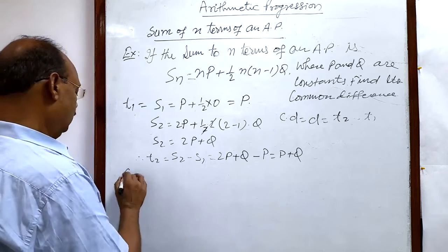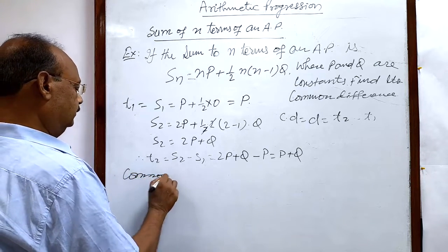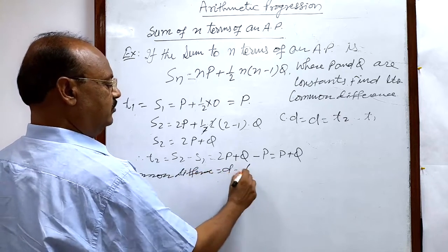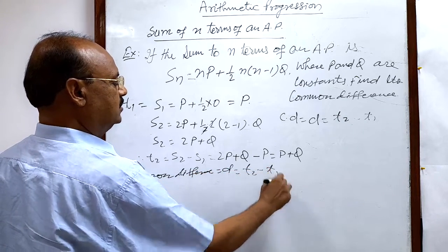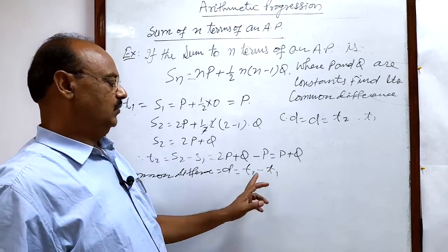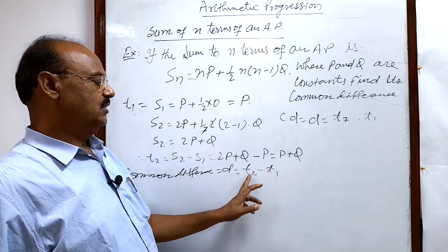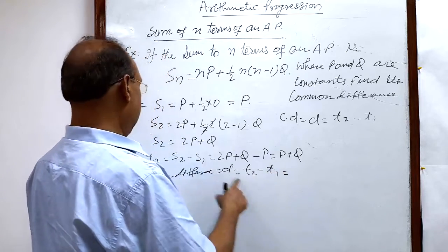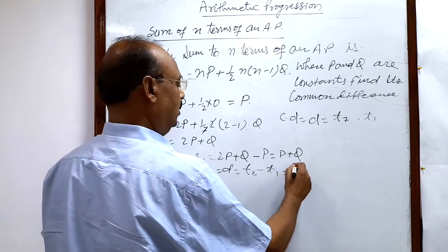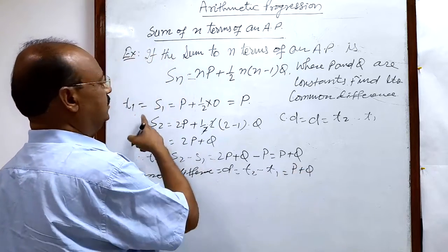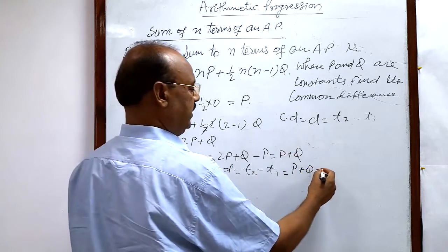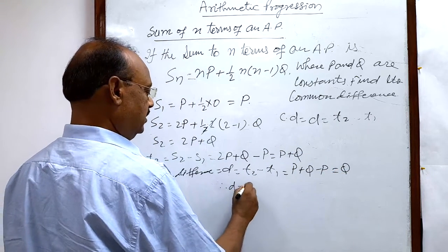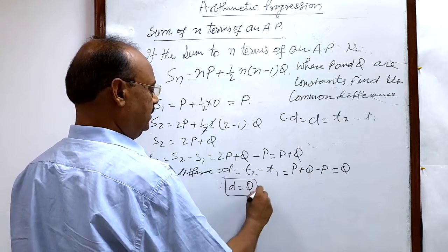Now we have to find out common difference. Common difference, suppose this is d, and that we can obtain by subtracting first term from second term. And second term is how much? This is second term, p plus q, and first term is how much? First term is p. p minus p, this is equal to q, so common difference d is equal to q, this is the answer.